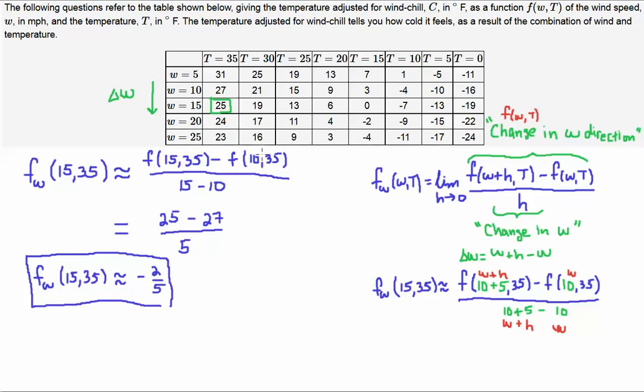Alright, let me quickly do an approximated derivative in the t direction. So, let's say I want to know the partial of f with respect to t at 10,30. So, let's see, at 10, w is 10, t is 30. So, that means I'm going to be here.